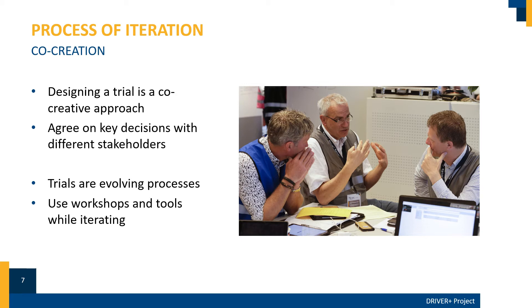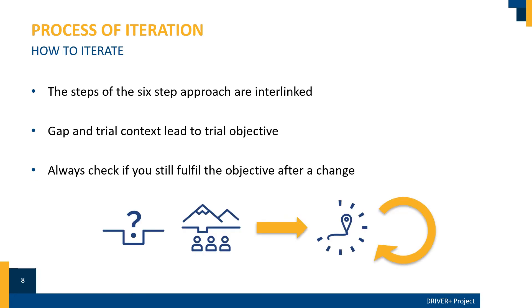While iterating, workshops and tools are essential. Don't be afraid to jump from step to step — work on the aspect on which you have new information and then see how this influences the other steps. All the steps of the six-step approach are interlinked, and hence changes in one step will most probably also cause changes in the others. This is why we start with the bigger picture and detail our way to the trial. First things first: what is your why? What is your aim with this trial? What is your goal? Your trial objective is your starting point for the six-step approach.